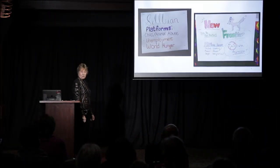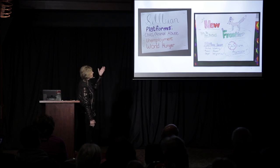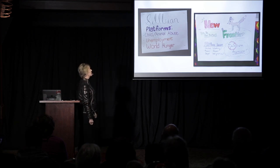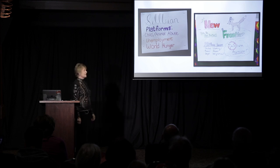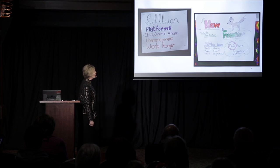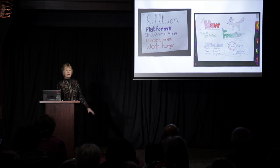Here are some things the children thought were important — what they wanted to stand for in their parties. As young children would prioritize, they thought it was important to address child and animal abuse, unemployment, and world hunger. The New Frontier Party focused on global warming, animal abuse, and illegal immigration. We know these are complex topics with no easy answers, so this requires that teachers help make them accessible to kids. They did research, and we limited that so they could manage some of those complex issues.